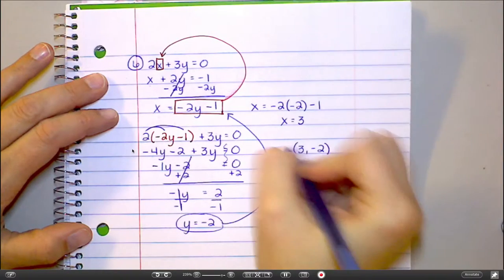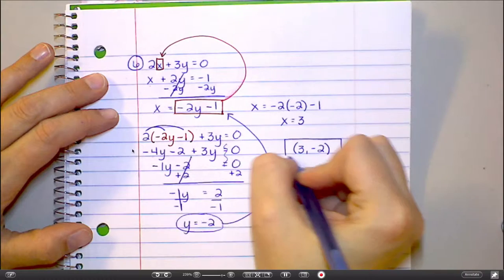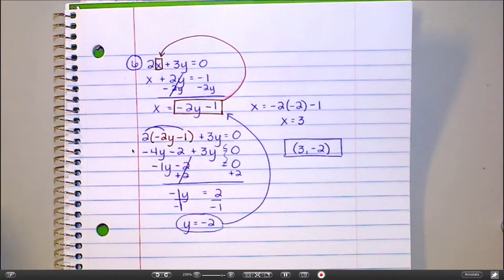So how would I write my final answer? 3, negative 2. There you go. 3, negative 2, final answer. What else do you want to see? Number 4.